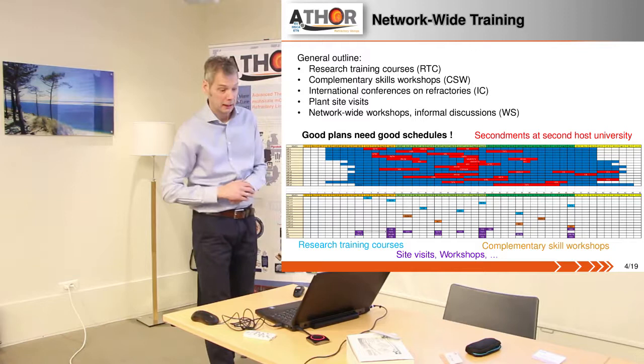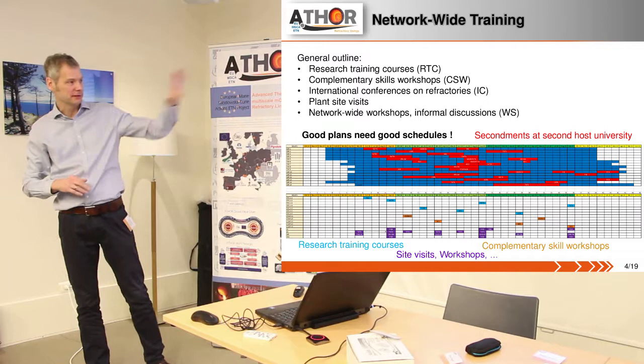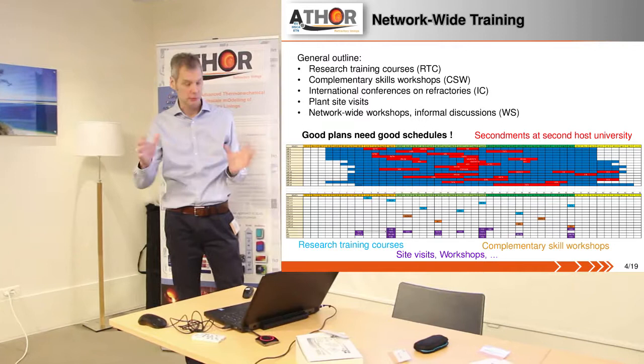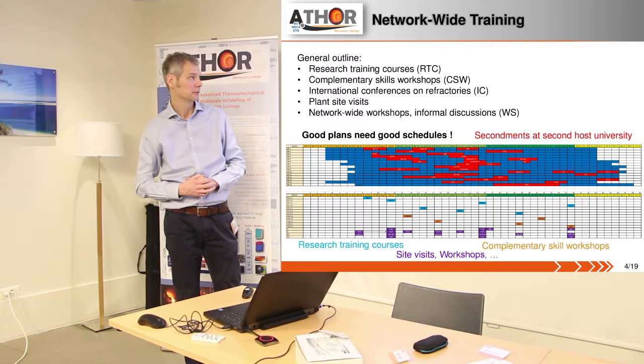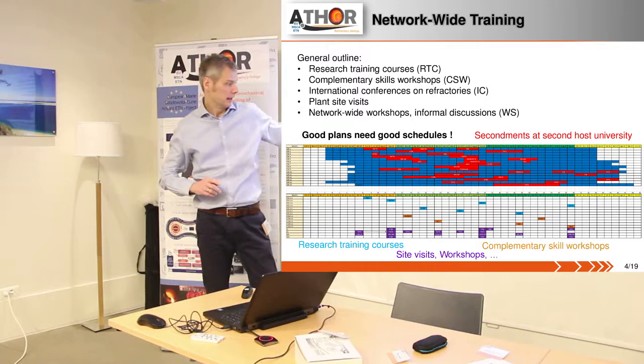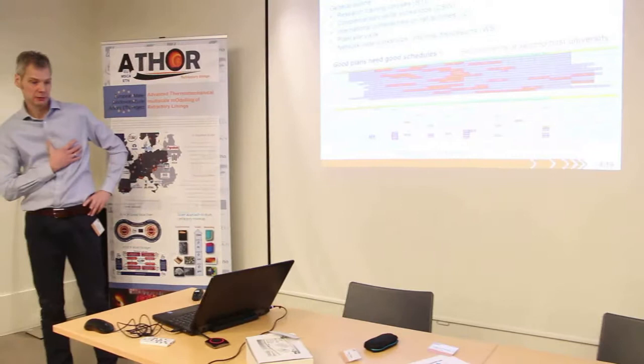Good plans need good schedules. When this Gantt chart was finally finalized I was a little bit shocked to see all these different activities pressed into one chart. Blue means the host university time, the reds are the secondments at the second host university — you see already maybe one-third of research time students will be at different places, which could also be an industrial secondment. Here you see the research training courses, site visits, and workshops.